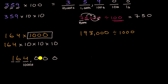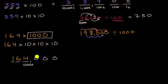That's consistent with the pattern: we added three zeros to the right. Similarly, for 198,000 divided by 1,000, we shift all digits three places to the right. What was in the hundred-thousands place goes into the hundreds place. What was in the 10,000s place goes into the tens place. What was in the thousands place goes into the ones place. Another way to think about it: the three trailing zeros go away. So instead of 100,000 we get 100, instead of 90,000 we get 90, and instead of 8,000 we get 8. So 198,000 divided by 1,000 equals 198.